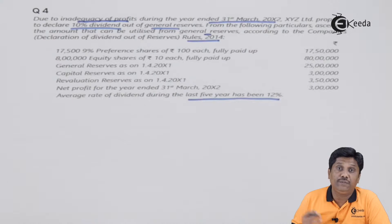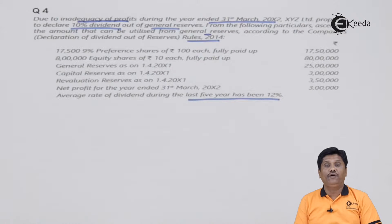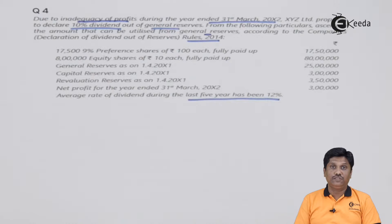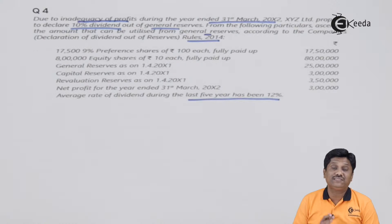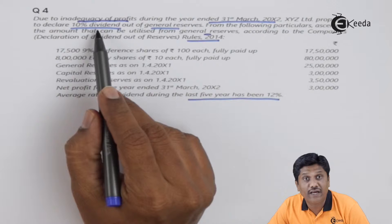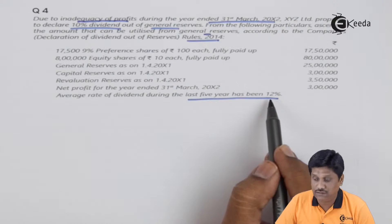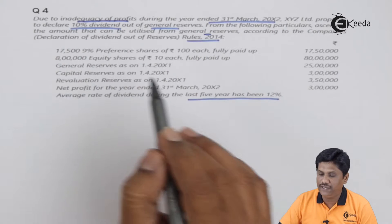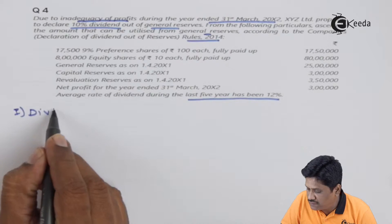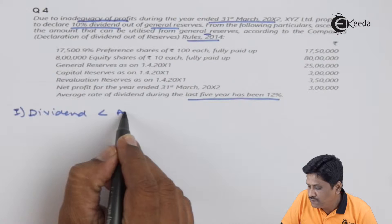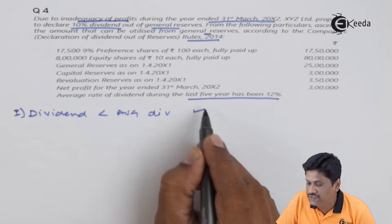आपको ये पता होना चाहिए कि past profit में से अगर आपको profit withdraw करना है तो उसके norms क्या हैं. पहला norm यह है कि आपका जो dividend declare होता है, वो rate आपके past 3 years के average dividend rate से कम होना चाहिए. अपने case में dividend rate 10% declare करना है, लेकिन past 5 years का average is 12%, so dividend to be declared should be less than average dividend - condition satisfied.